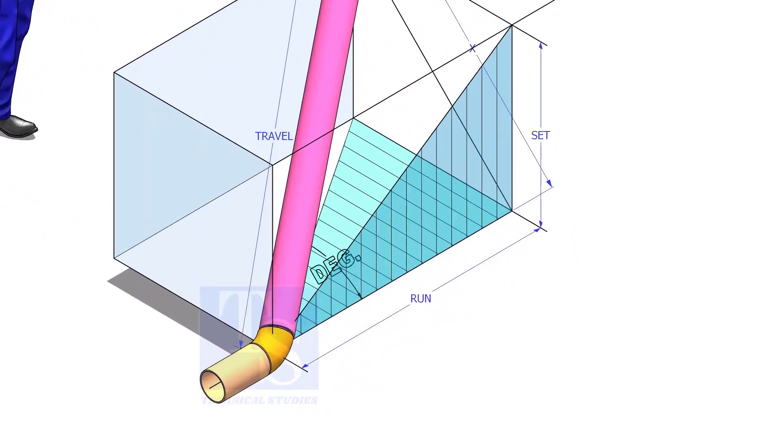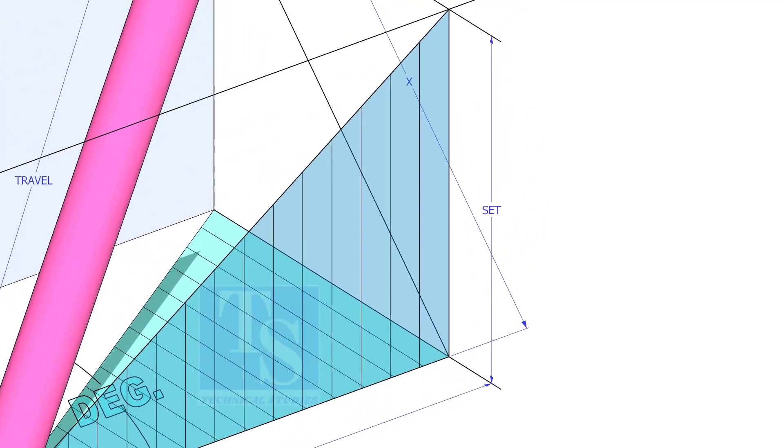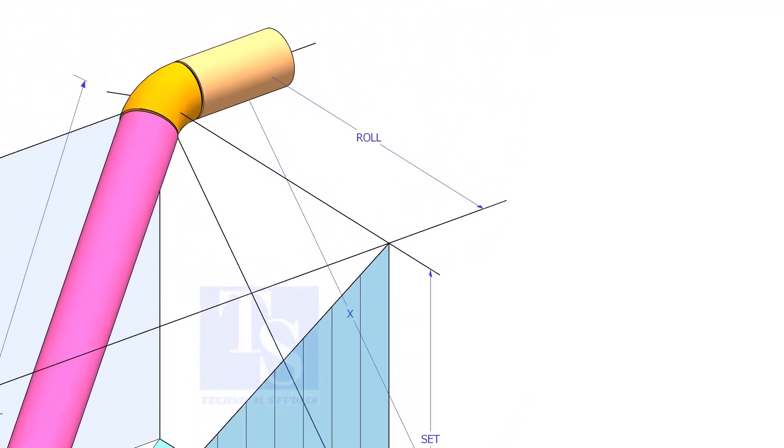In this video, I will show you how to calculate the travel length and the including angle of a double rolled offset pipe.